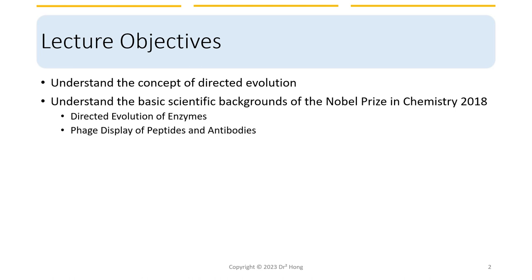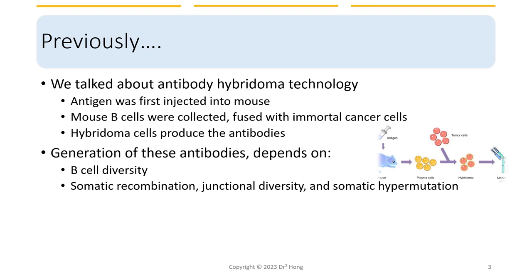We have previously talked about using hybridoma technology to produce large quantities of monoclonal antibodies. In brief, hybridoma technology involves first injecting an antigen into a mouse. After the mouse mounted an immune response, antibody-producing B cells were collected and fused with immortal cancer cells that can divide indefinitely in cell culture. The resulting fused cells are called hybridomas and have the ability to produce large quantities of a single type of antibodies, meaning monoclonal antibodies.